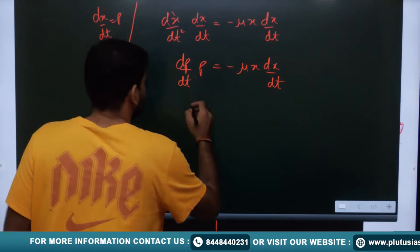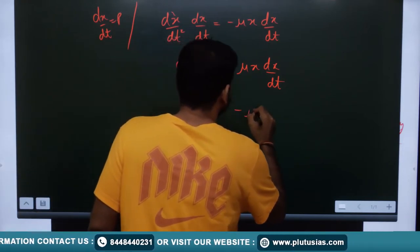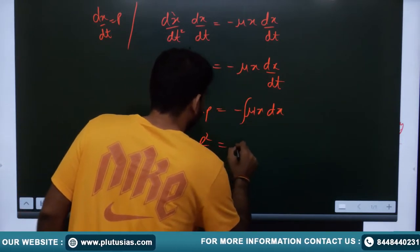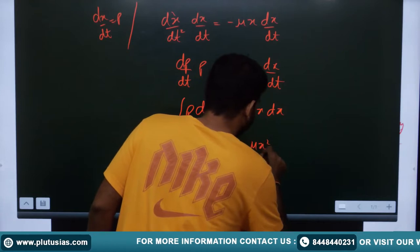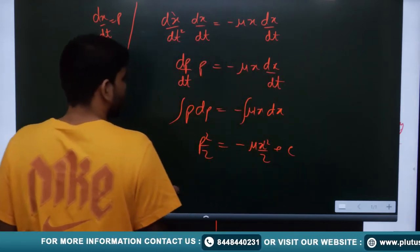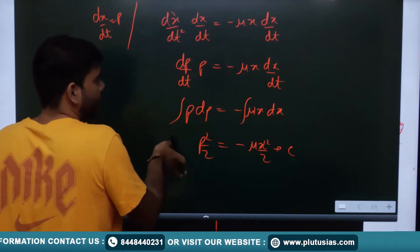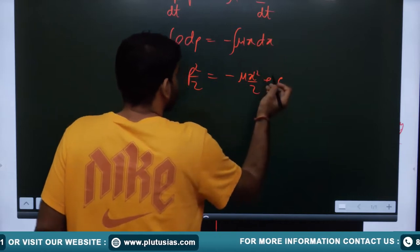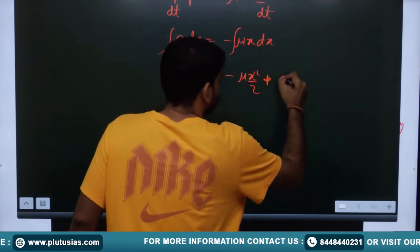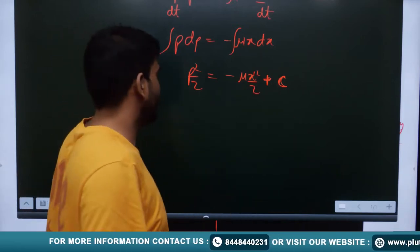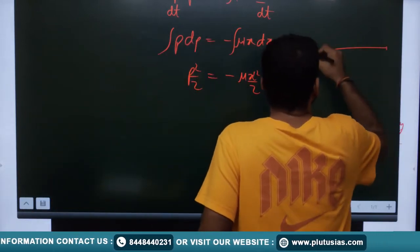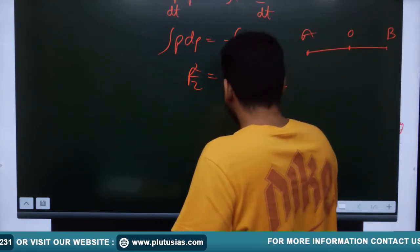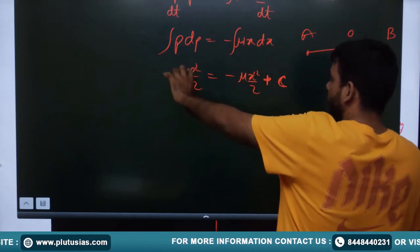Integrating p dp = −ν x dx, we get p²/2 = −νx²/2 + c, where c is the constant of integration. To remove this constant, we need to put a specific condition where we know the values of p and x. We use the known properties of SHM: velocity is maximum at the midpoint, and velocity is zero at the nodes (the extreme points).